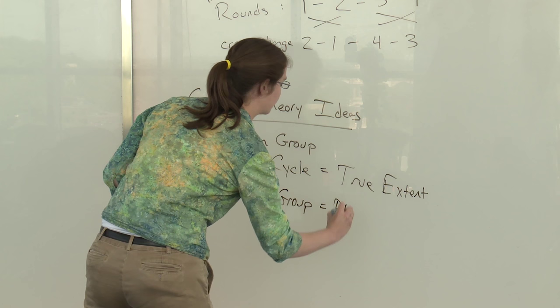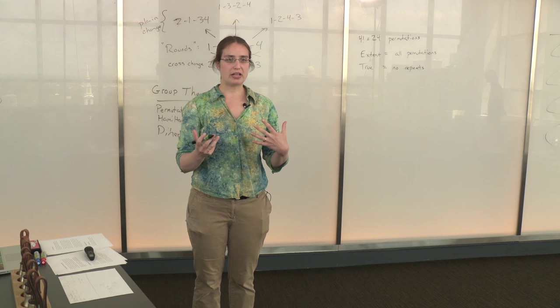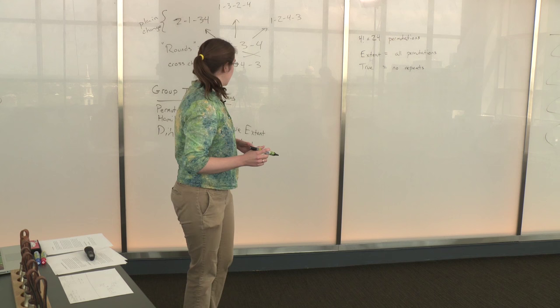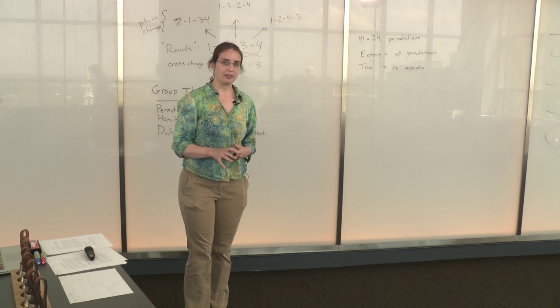Now the dihedral group is in group theory much more often described as the set of symmetries of a square. That is, the ways in which we can rotate or reflect a square and get back a square that looks very much the same. And there's actually a nice parallel between the dihedral group thought of as the symmetries of a square and the plain lead, those changes that we just rang for you from the plain hunt. So let me try to show you how that works.